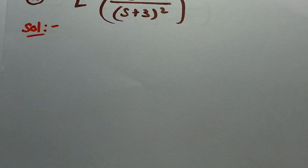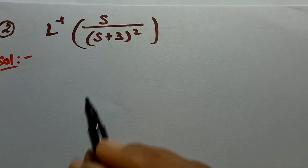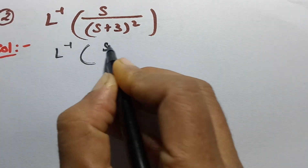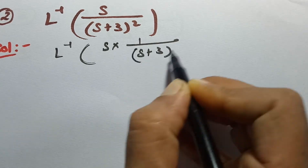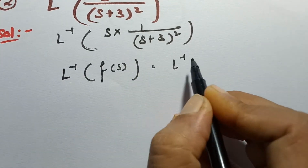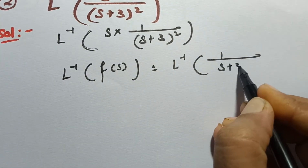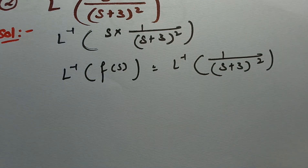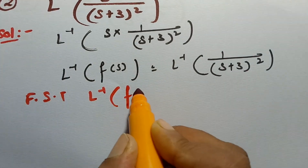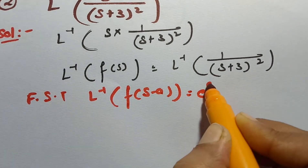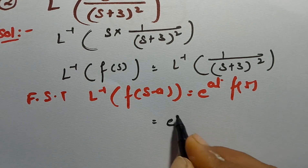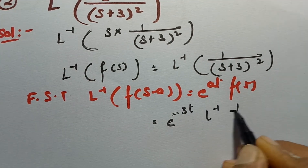The next problem — you can do along with me. It is also multiplication with s, so separate it: s × 1/(s+3)². Take the inverse Laplace transform of F(s) = 1/(s+3)². Apply the first shifting theorem: inverse Laplace transform of F(s−a) is e^(at)·f(t), so it becomes e^(−3t) times the inverse Laplace transform of 1/s².